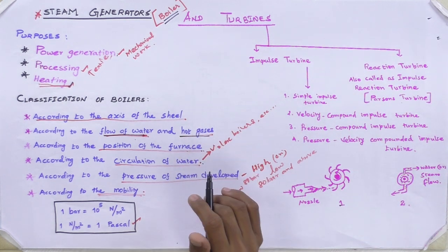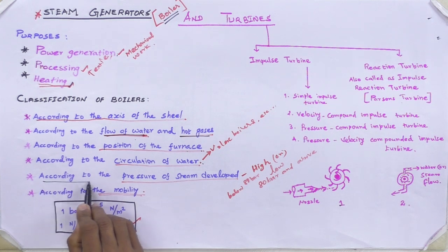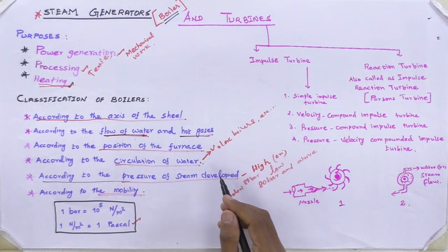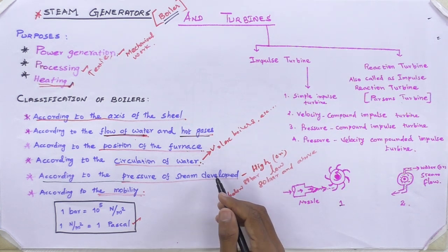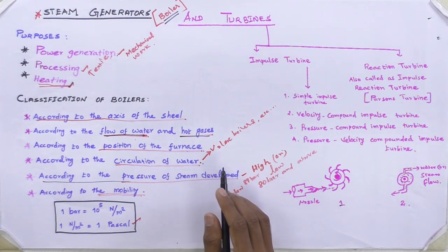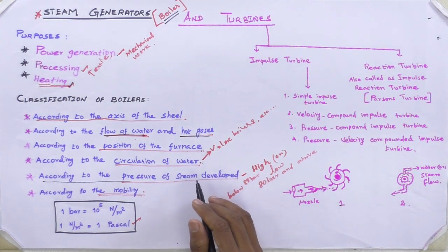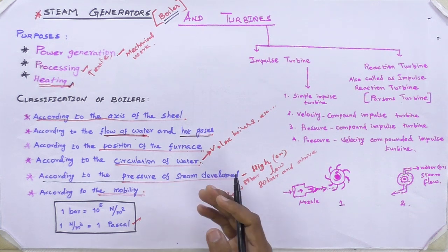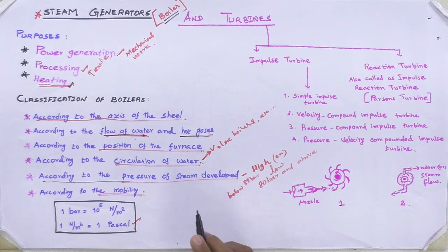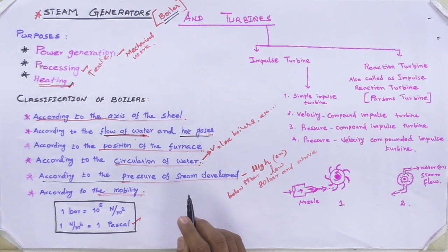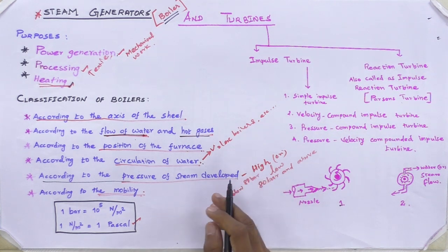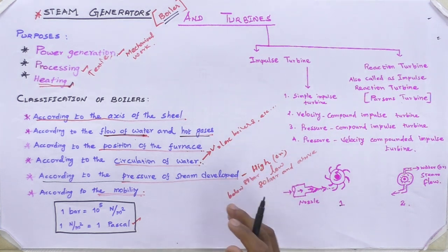Babcock and Wilcox boiler is also a natural circulation type. The fifth classification is according to the pressure of steam developed — it may be high pressure or low pressure. Boilers which produce steam at pressure of 80 bar and above are called high pressure boilers. Examples: Babcock and Wilcox, Lamont, etc. Boilers which produce steam at pressure below 80 bar are called low pressure boilers. Examples: locomotive boiler, Cochrane boiler, Lancashire boiler.